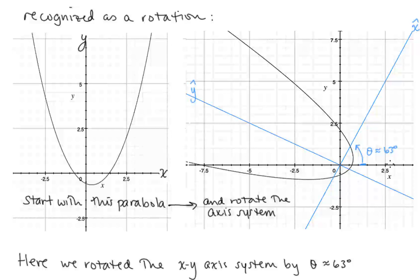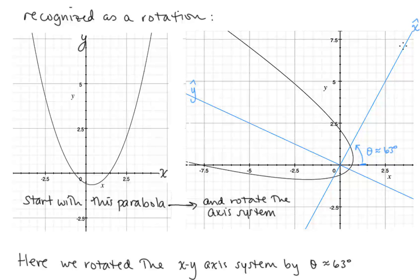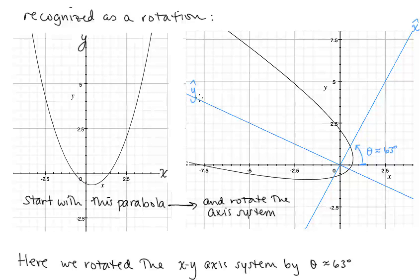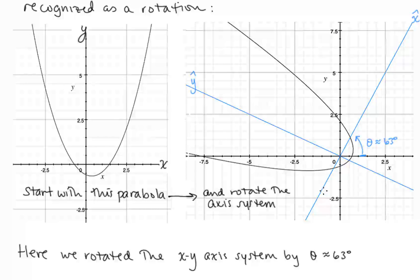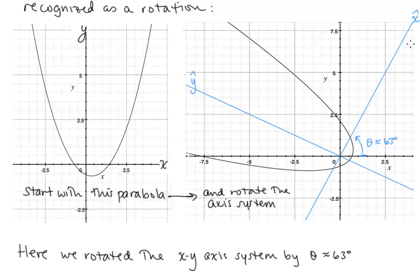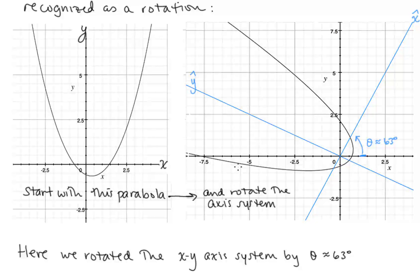The x-axis rotates to become the x-hat axis, and the y-axis rotates to become the y-hat axis. Now notice that in this new axis system, the parabola will have a directrix parallel to the x-hat axis. So all the work we had in lesson 27 can apply to this parabola if we change to the x-hat, y-hat axis system.